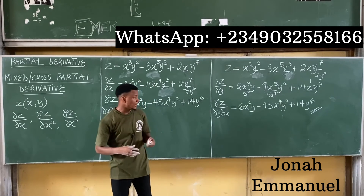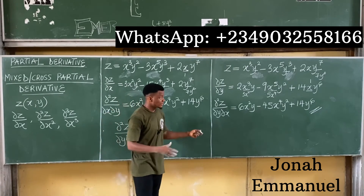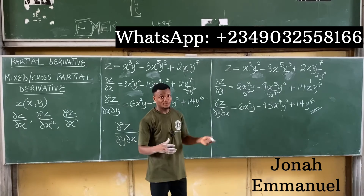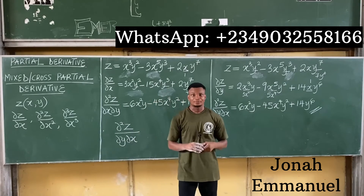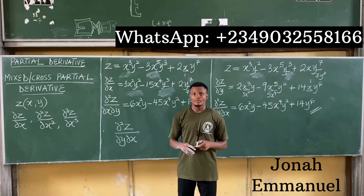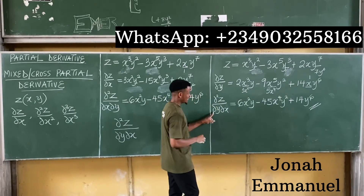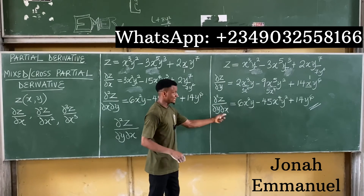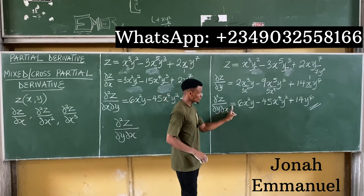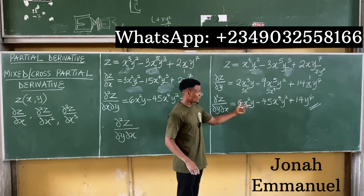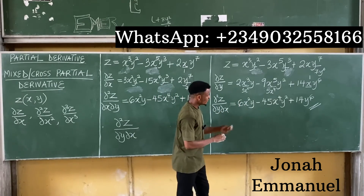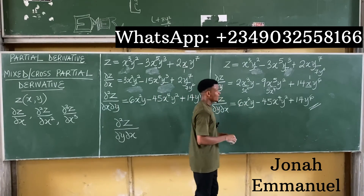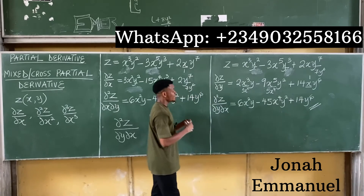So ∂²z/∂y∂x equals 6x²y minus 45x⁴y² plus 14y⁶. This is how we solve partial derivatives using the mixed or cross partial derivative formula.